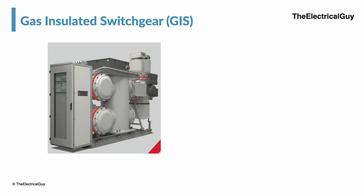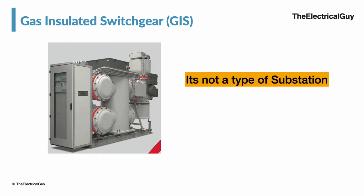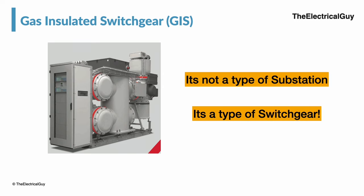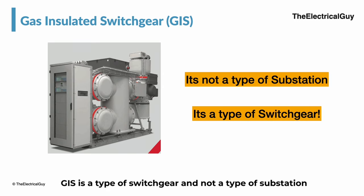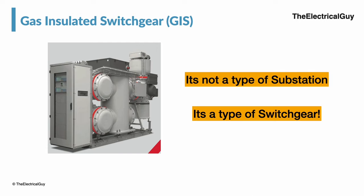First of all, let's make one thing very clear. GIS or gas insulated switchgear is not a type of substation. It is actually a switchgear technology that is used in a substation. GIS is a type of switchgear and not a type of substation. Types of substations are different. But generally, if GIS is used in a substation, then many people refer to it as a GIS substation.